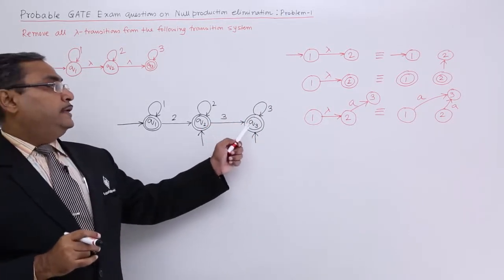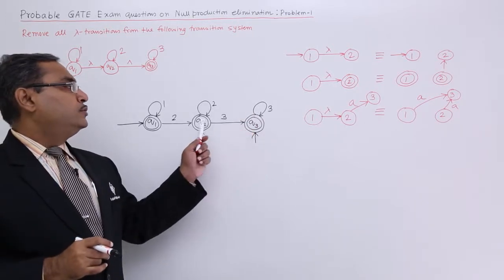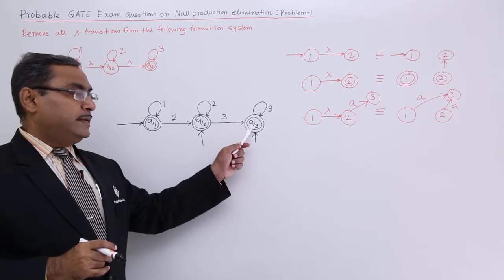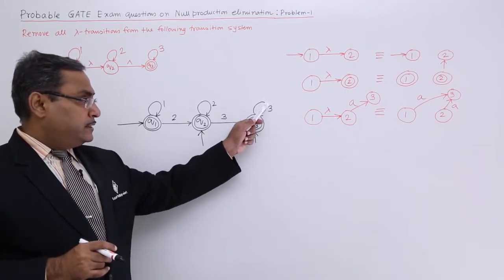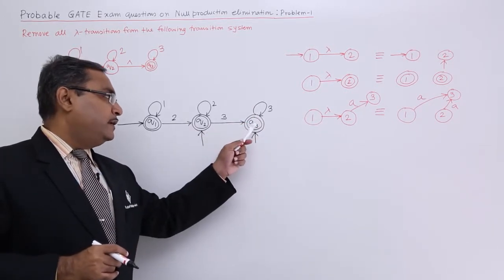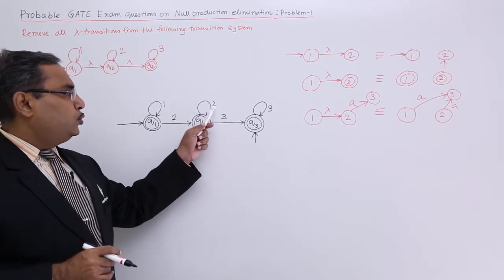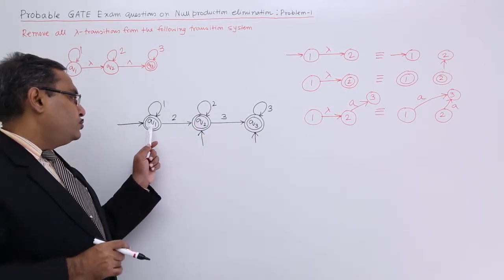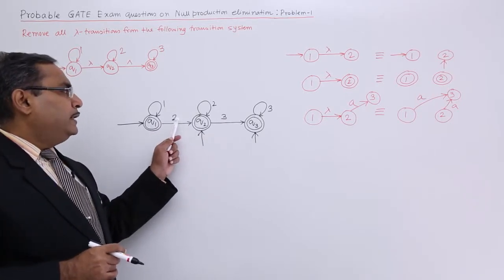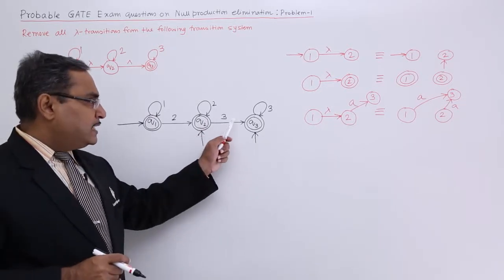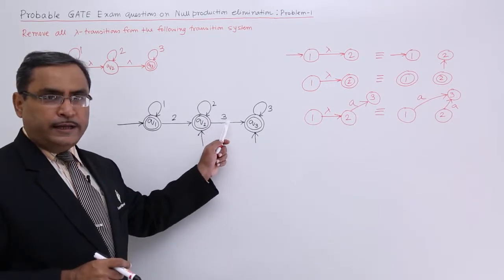So now see it is having one outward edge. I am drawing the same edge with the same level to the same next state. Here the next state was Q3. So, next state has become Q3. Here the self loop is there with the level 2. Next state was Q2. So, from Q1 to Q2, I will be having the same input and same next state.